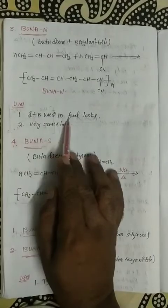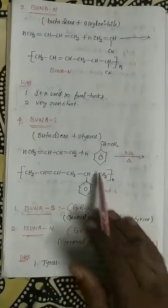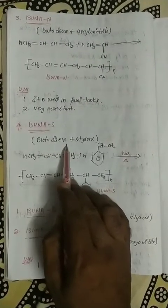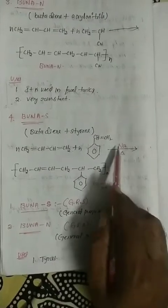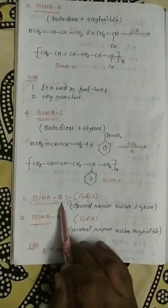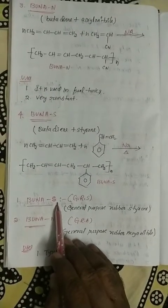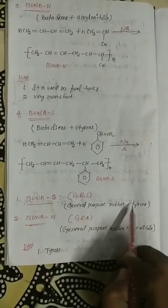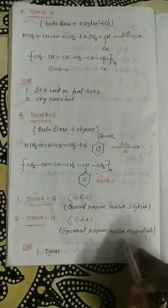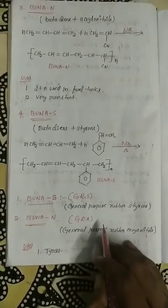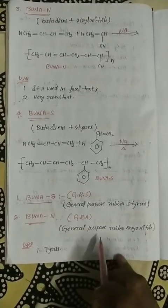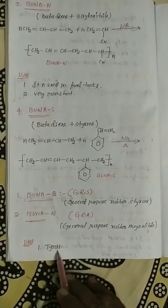Buna-N is used in fuel tanks due to its very high resistance. Buna-S is formed from butadiene plus styrene in the presence of sodium. Buna-S is commonly known as GRS — General Purpose Rubber Styrene. Buna-N is commonly known as GRA — General Purpose Rubber Acrylonitrile. Both Buna-N and Buna-S are commonly used in tires.